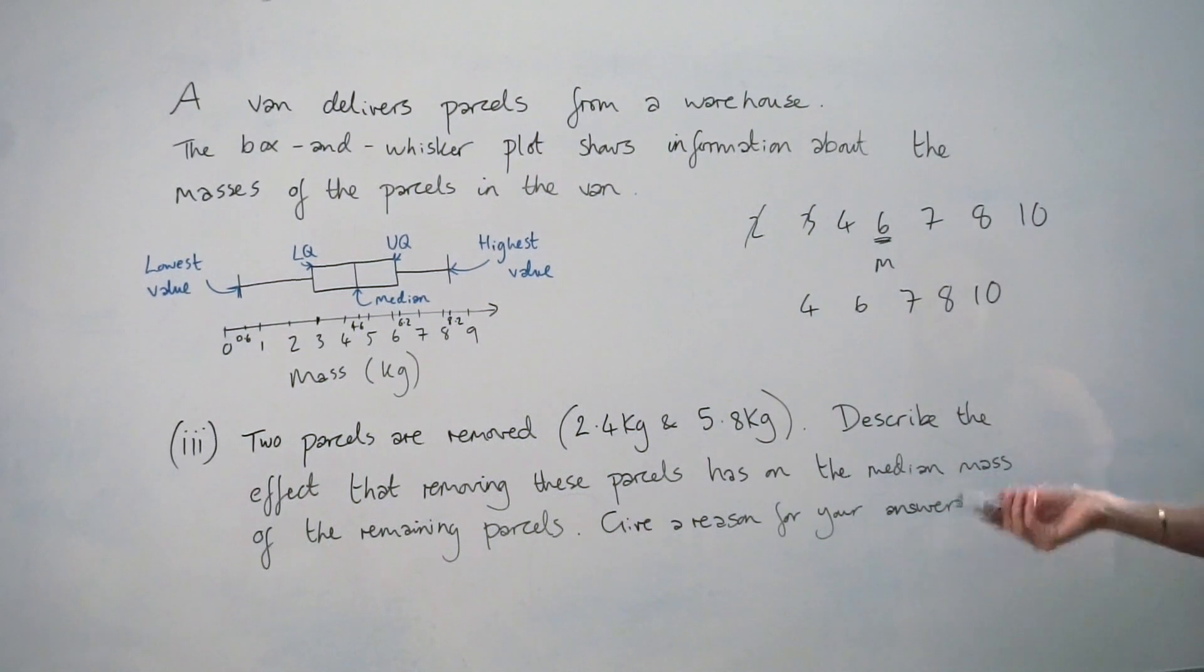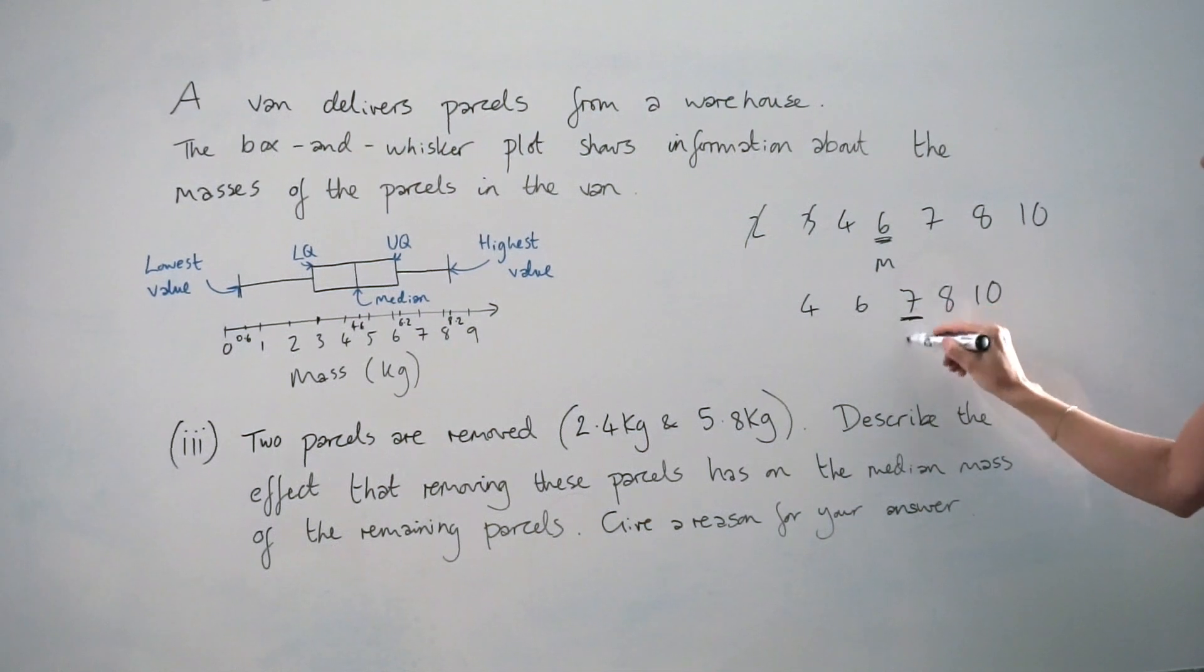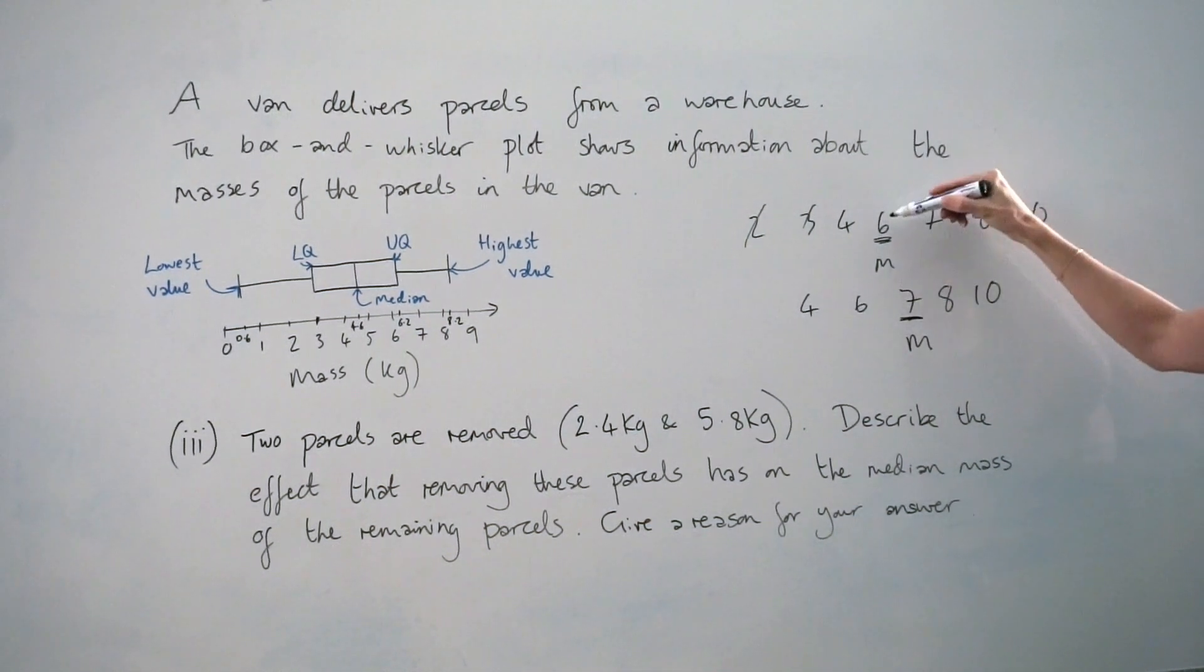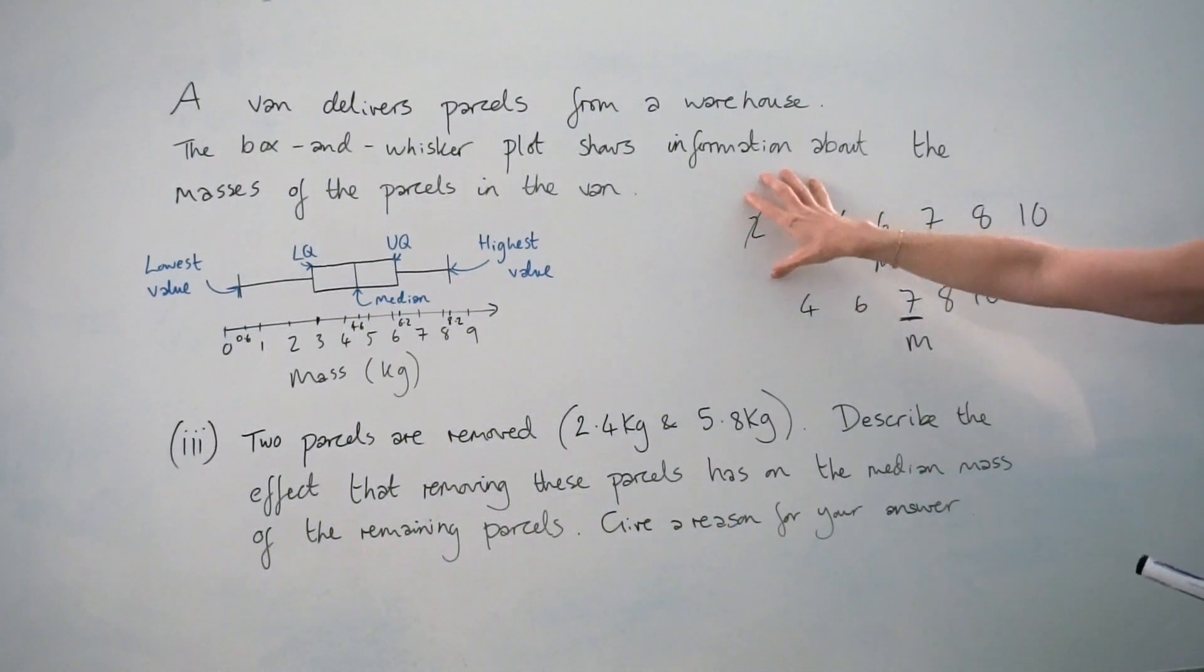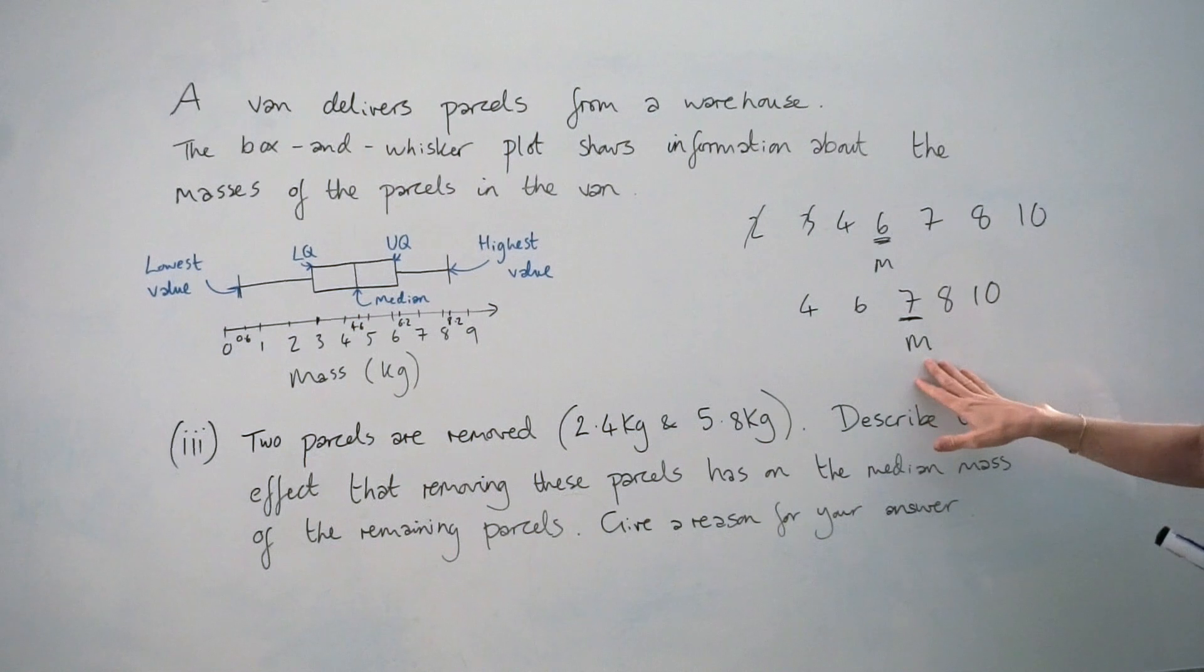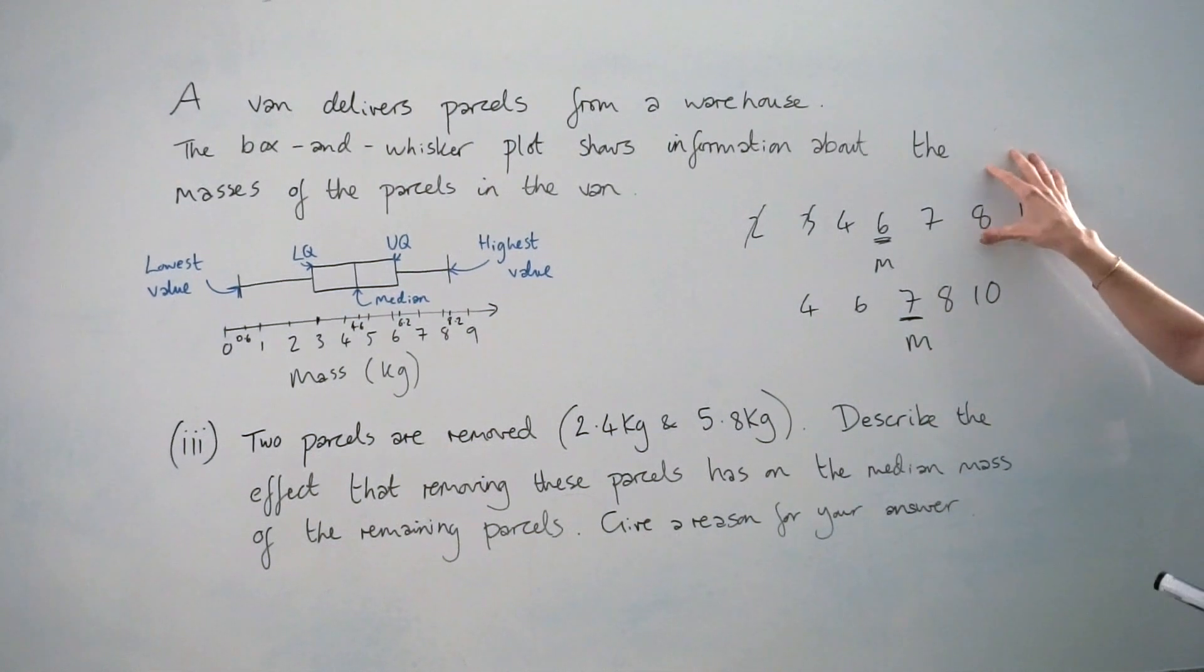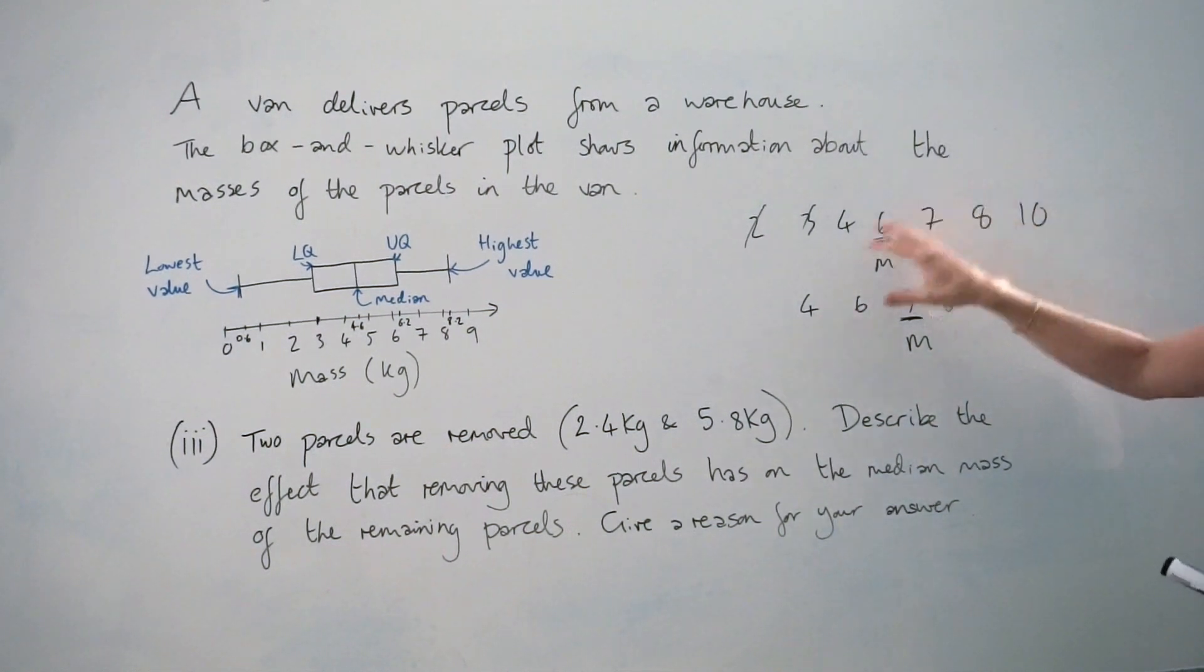If I work out the new median, so the middle number again, it's here. And you should be able to see the median has increased. So by taking two parcels that are smaller than the median, the median increases. And so if you take two parcels that are greater than the median, the median would decrease.